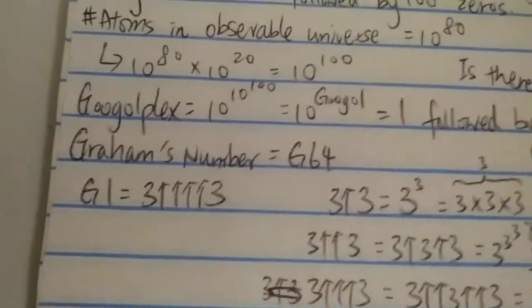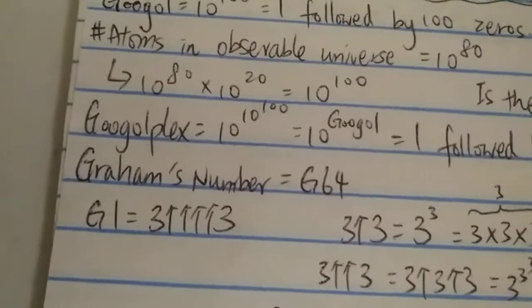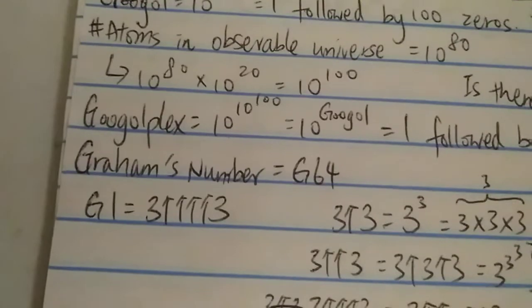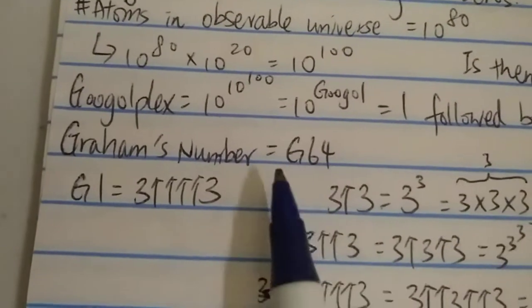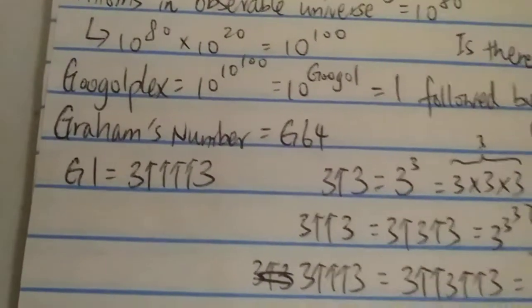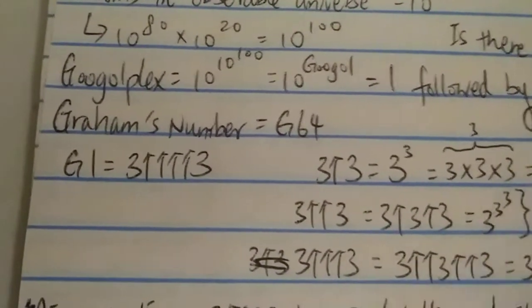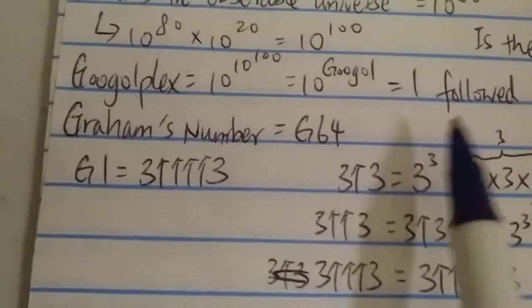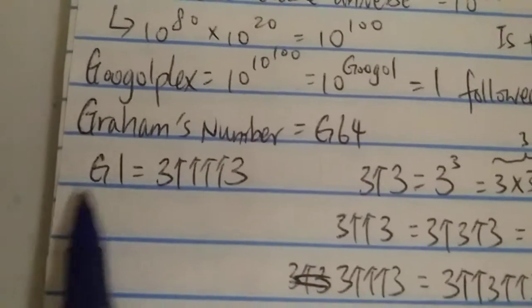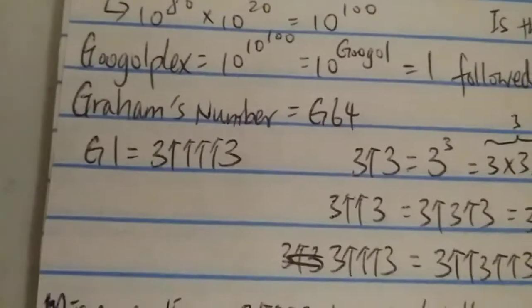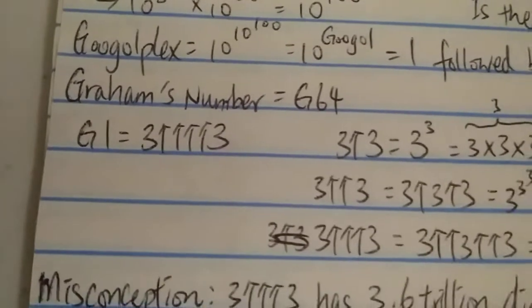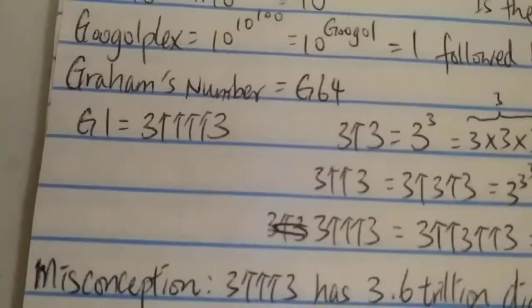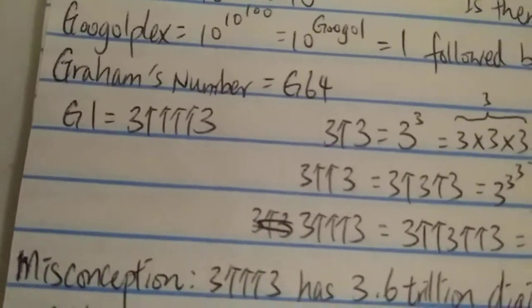Now, how big is Graham's number? Graham's number is G64. In order to understand this, we have to first look at G1, which is 3 with 4 up-arrows 3. So what is this, and how big is it?